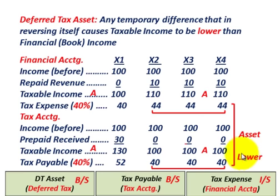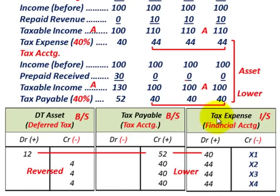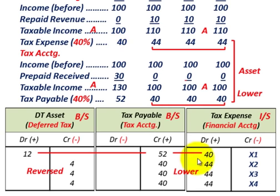That's what we mean by a deferred tax asset — we're going to be paying less taxes for tax accounting than for financial or book accounting. Recording it, same as before using T-accounts. Tax expense from financial accounting: $40,000 for the first year, $44,000 for each of the next three years.